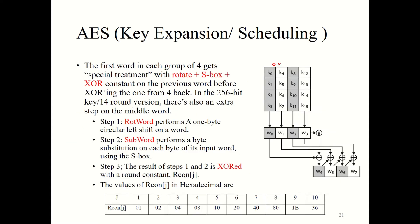This is the original key. We have word zero, word one, word two, and word three — as written right here. In order to generate the key for the second round, we start from these words.